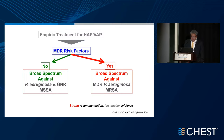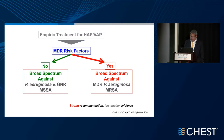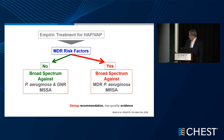The initial approach is to consider empiric treatment of HAP and VAP. We need to think about the risk factors related to multi-drug resistance. For patients who do not have any associated risk factors for MDR organisms, broad-spectrum antibiotics against both pseudomonas and typical gram-negative organisms, as well as coverage for MSSA, is recommended. However, if patients have risk factors for either MRSA or MDR pseudomonas, broad-spectrum coverage has a strong recommendation, even though the quality of evidence in 2016 was low.